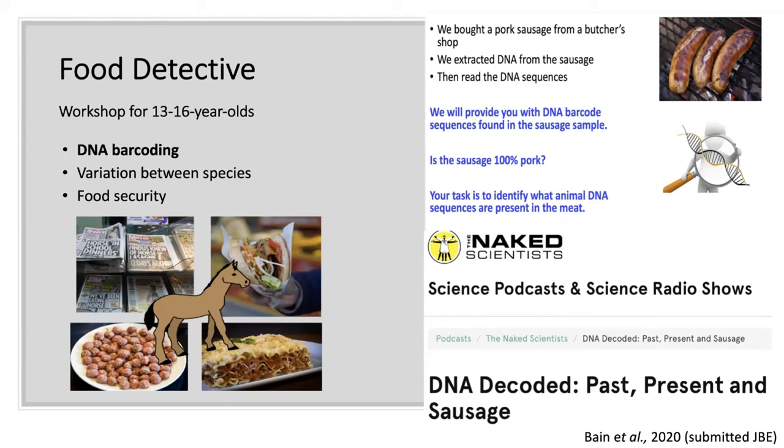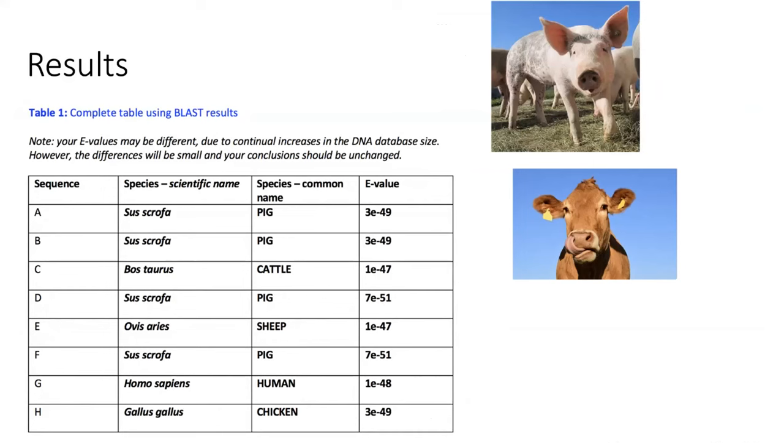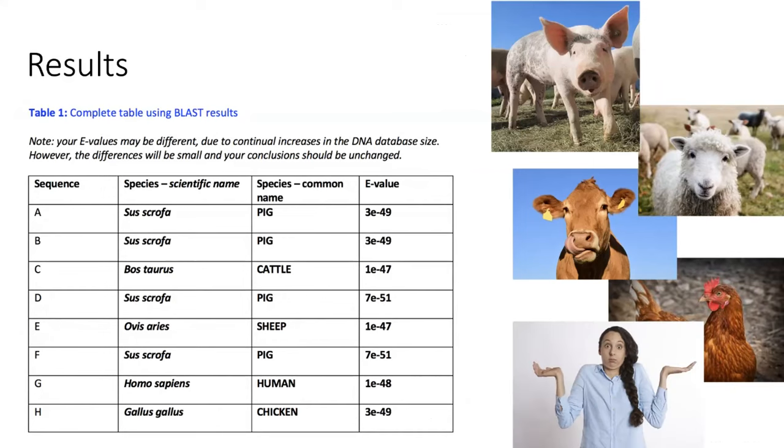This is the kind of things they find in the pork sausage. It is a bit unusual. We get them before they do this to think about scientific method and creating hypotheses and what they think they might find and why. They all think they'll find just pig DNA because it is advertised as 100% pork sausage, but obviously we find other things as well. Thankfully those are just in very small quantities, especially the human part.